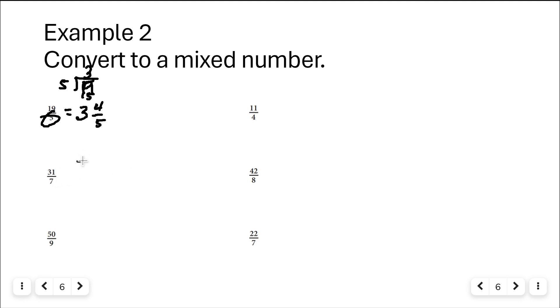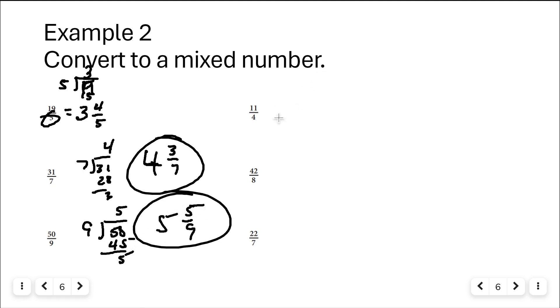7 into 31. 7 goes into 31 4 whole times with 3 as a remainder. So that's going to be 4 and 3 sevenths. 50 over 9, 9 goes into 50 a total of 5 whole times. So that's 5, 9 times 5 is 45. 5 is the remainder. So that's 5 out of 9, 5 and 5/9. 11 over 4, 4 goes into 11 2 times. So that's 2, and 3 quarters.